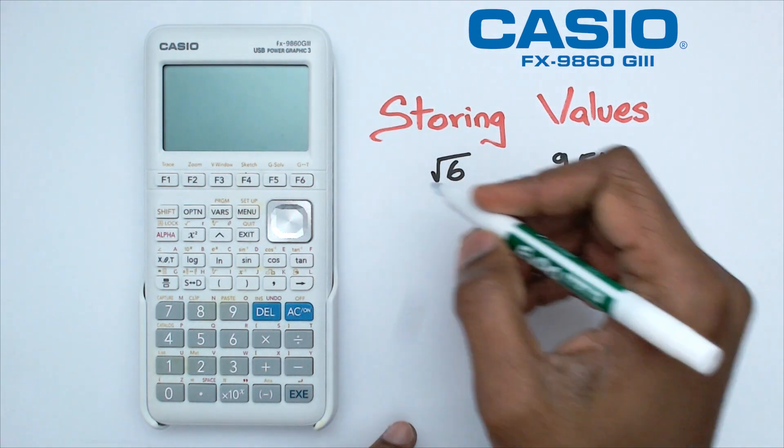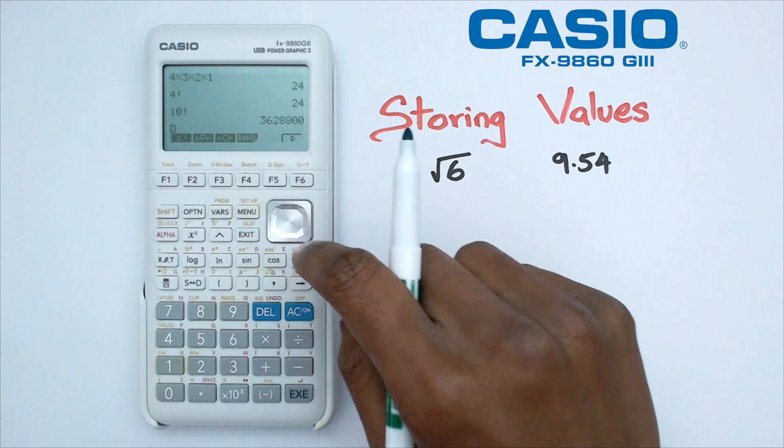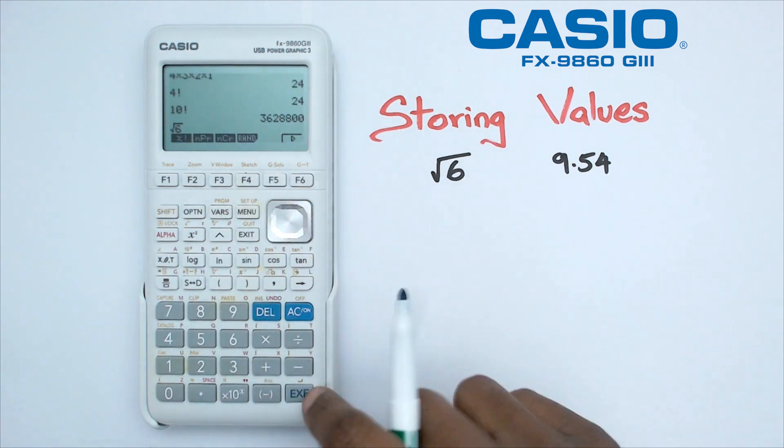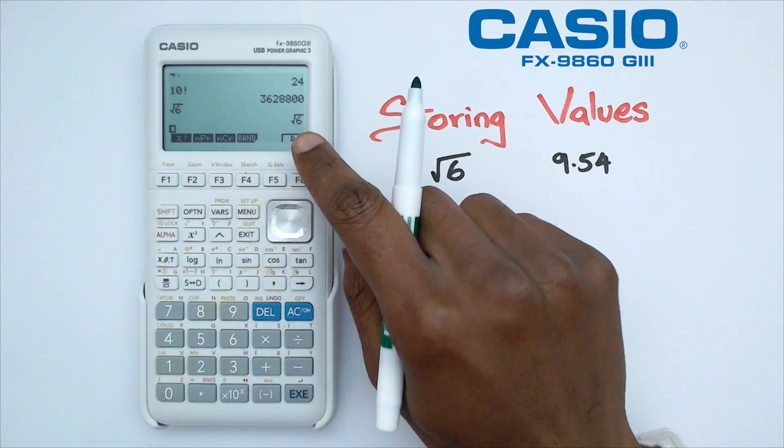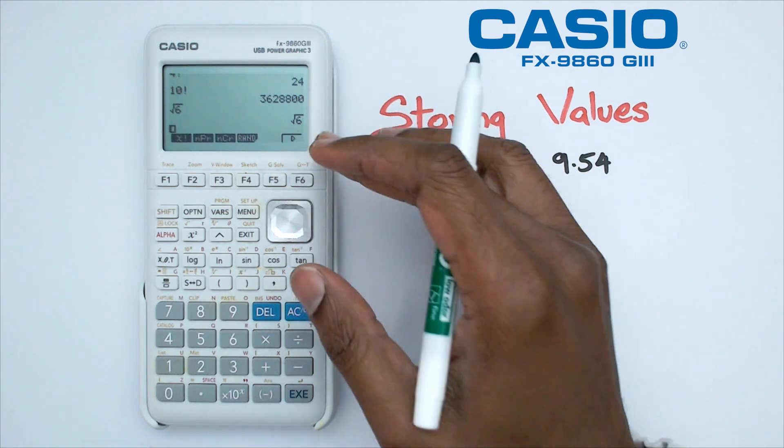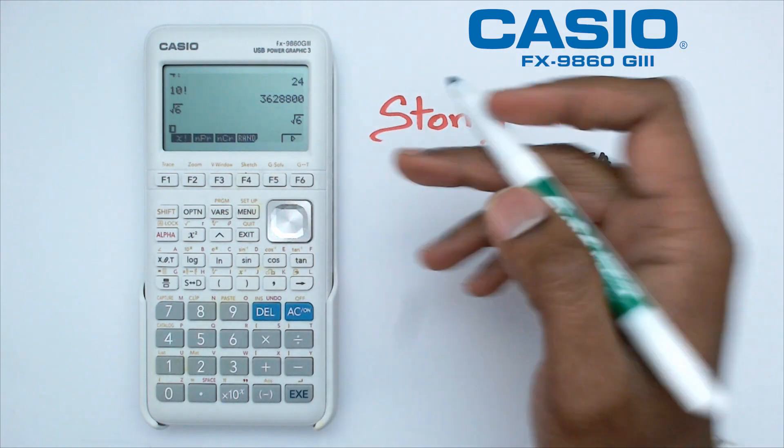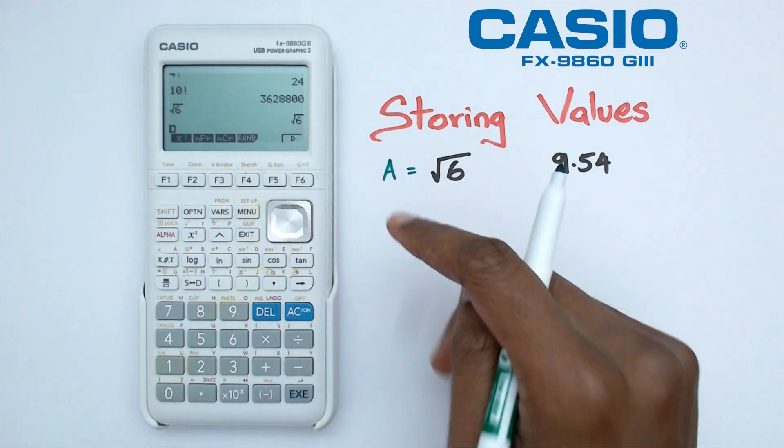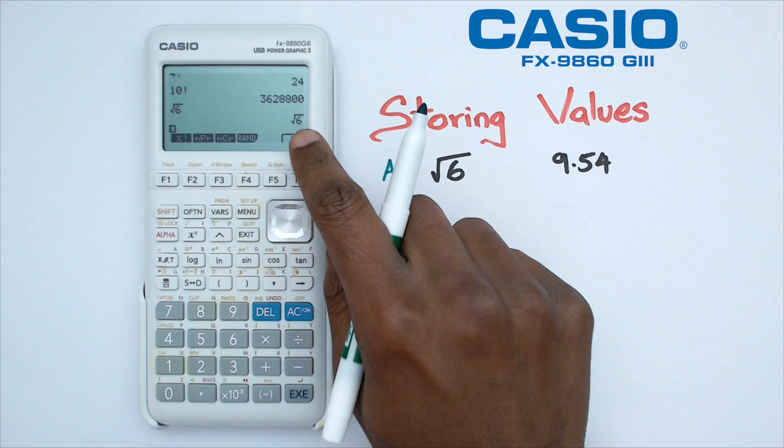So what do I mean by that? Let's say we're going to take the square root of six. I'm going to switch on the calculator and do square root of six right now. There we go, that's square root of six. But what I would like to do is use the square root of six for another calculation later on, so I might actually put this as the letter A. The way I'm going to do this is because I have square root of six here as the answer.